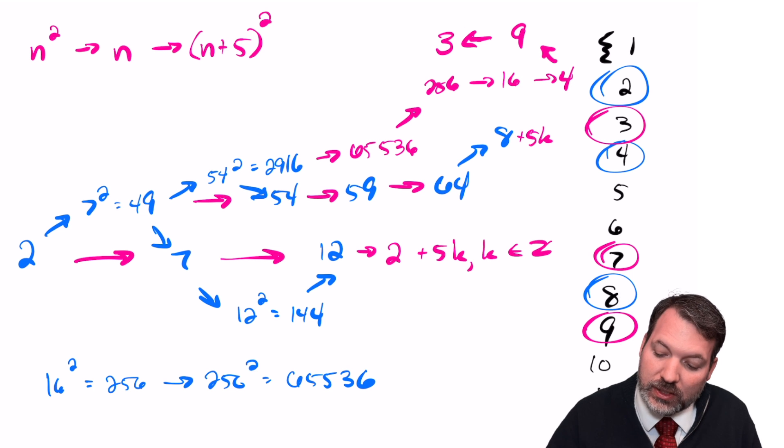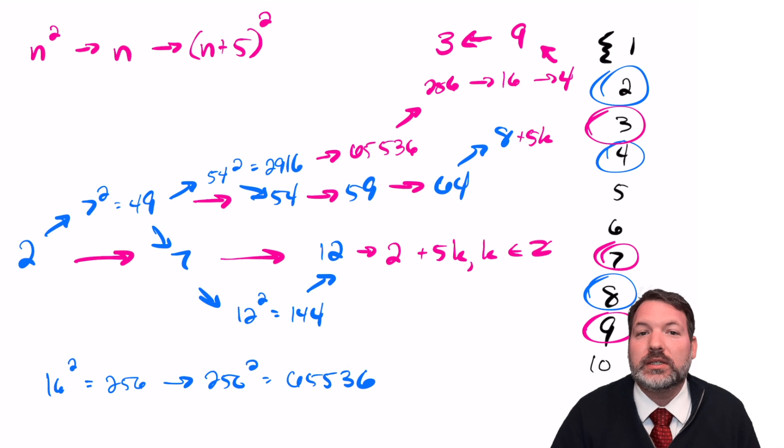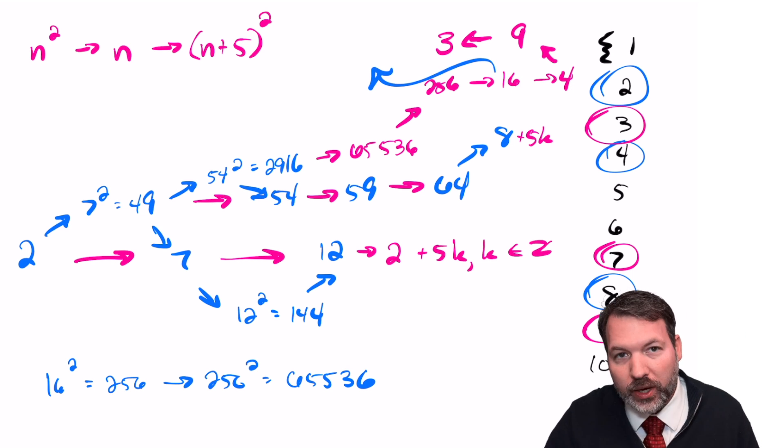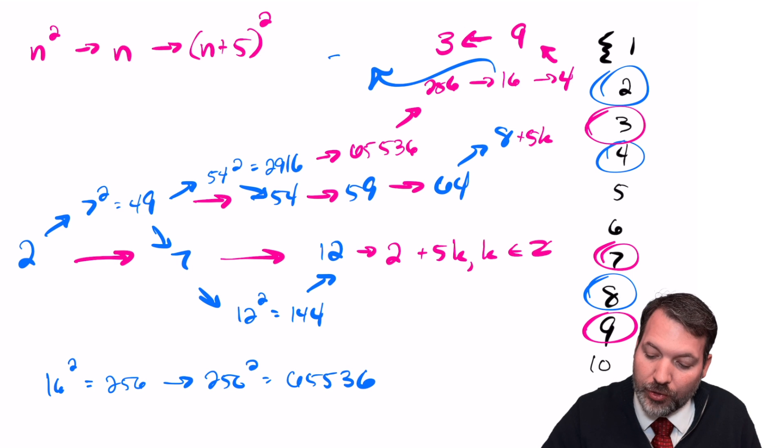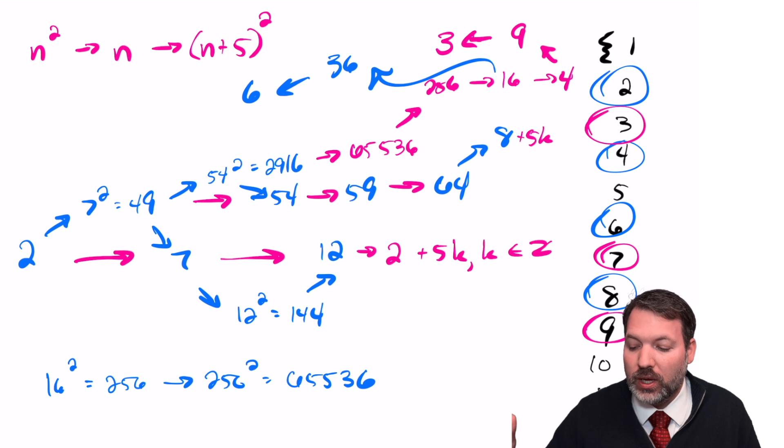There's one other number we can get pretty easily here and that is 6. 6, of course, is the square root of 36, and so if we can get 36, we can get 6. You can tell since we already have 16, we can go 21, 26, 31, 36, and that's what gets us 6. And so we can see, at minimum, this set has to contain 2, 3, 4, 6, 7, 8, 9, and all the numbers that are 5, 10, 15, on and on forever larger than those numbers.